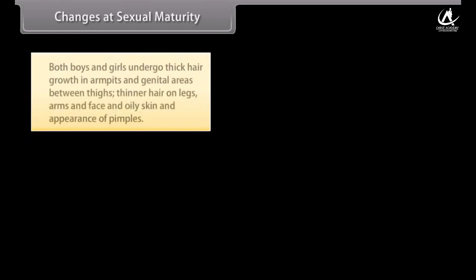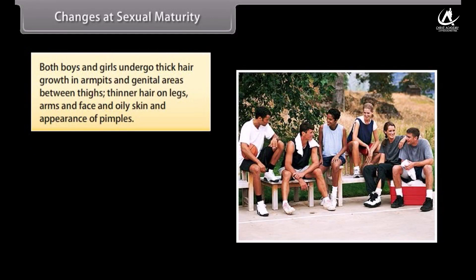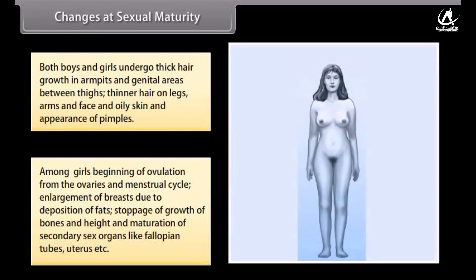At sexual maturity, both boys and girls undergo thick hair growth in armpits and genital areas, thinner hair on legs, arms and face, and oily skin with appearance of pimples. Among girls: beginning of ovulation and menstrual cycle, enlargement of breasts due to fat deposition, darkening of nipple skin, stoppage of bone growth, and maturation of secondary sex organs like fallopian tubes and uterus.